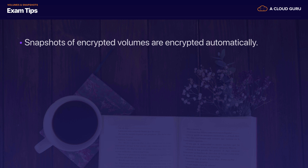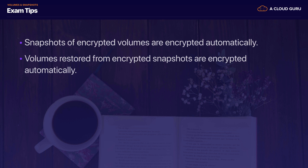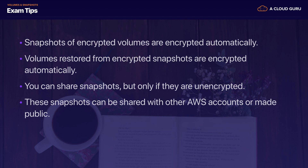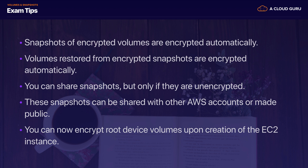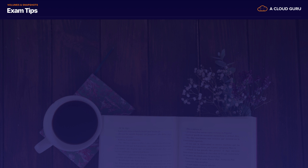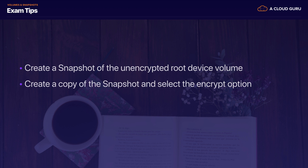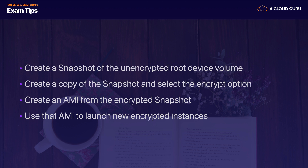For exam tips: remember that snapshots of encrypted volumes are encrypted automatically. Volumes restored from encrypted snapshots are also encrypted automatically. You can share snapshots, but only if they are unencrypted — these can be shared with other AWS accounts or made public, but they must be unencrypted. You can now encrypt root device volumes upon creation of an EC2 instance. If you have an unencrypted root device volume, the process is: create a snapshot of it, create a copy of the snapshot and select the encrypt option, create an AMI from the encrypted snapshot, then use that AMI to launch new encrypted instances.